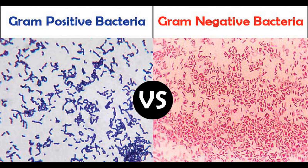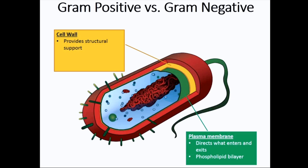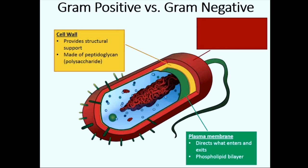Now let's see the scientific theory behind these observations. Most bacteria have three layers. The innermost layer is the plasma membrane, which directs what enters and exits the cell — it's a phospholipid bilayer with some proteins scattered in between. The middle layer is the cell wall, which provides structural support and is made up of a polysaccharide called peptidoglycan. The third outer layer is the capsule, a sticky outer layer for attachment and protection. The cell wall is the most important of the three layers for understanding gram negative and gram positive bacteria.